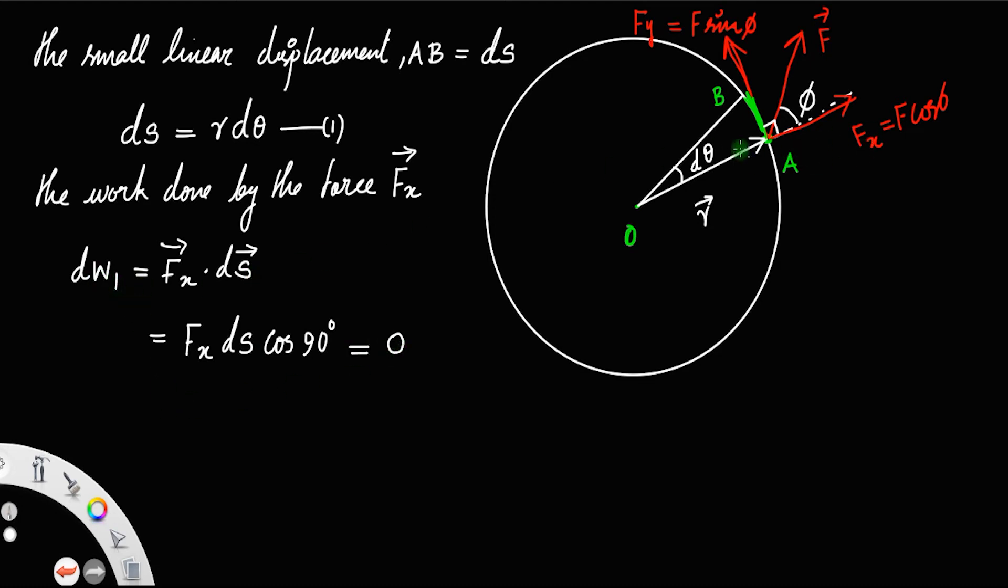The work done by Fx will be 0. Similarly, the work done by the second force, by the force Fy, dW2 is equal to Fy dot ds. But if you look at Fy and ds, this displacement and this force, they are along the same direction. So you can write this as Fy ds cos 0 degree.